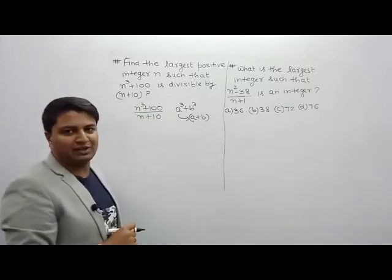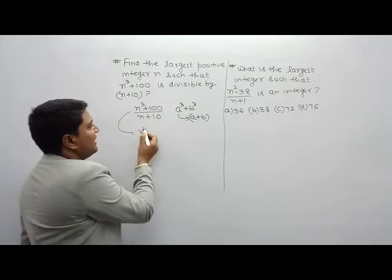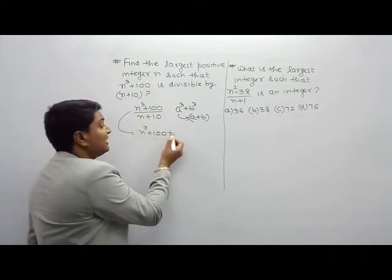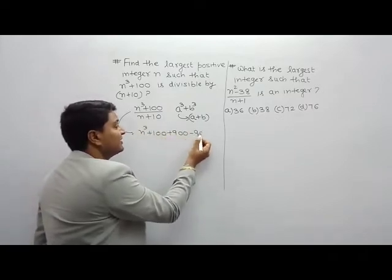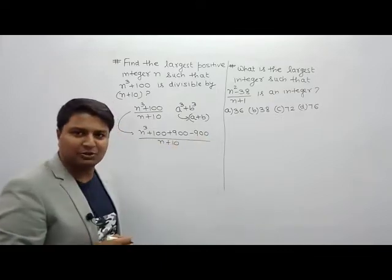Why do we make it a² plus b²? So if I say n plus 10, can I write this number n² plus 100 plus 900 minus 900? Tell me first. Why? Because we can see what we can do now. What can we say first?